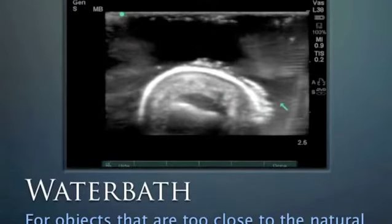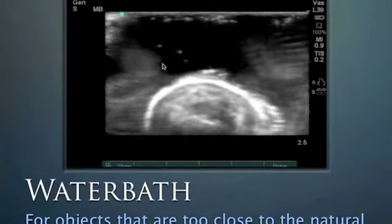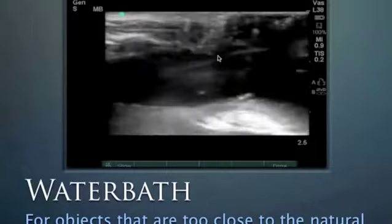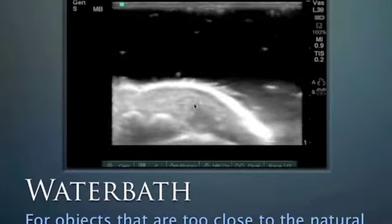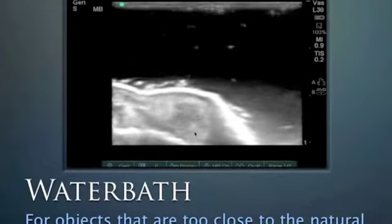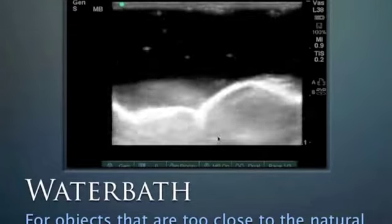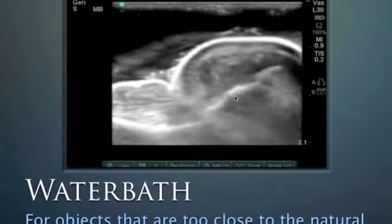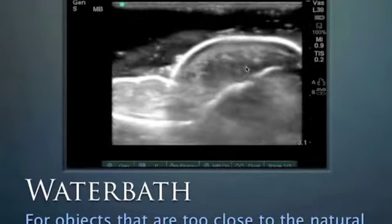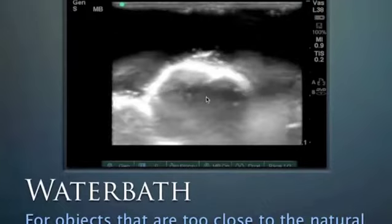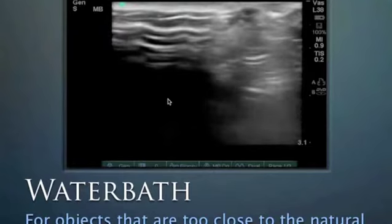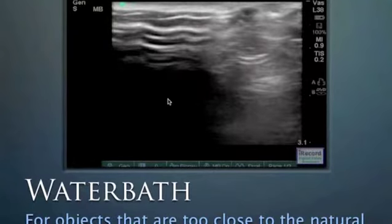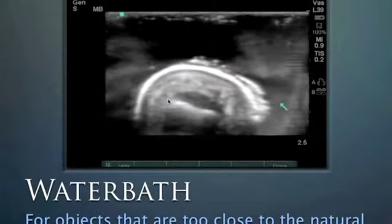Here's another example of a finger in the water bath. Standing away from the finger, we can see this patient has an abscess in the distal tip — the patient is even moving their finger and we can see it clearly. This happens to be the thumb, and we can see hypoechoic debris within the pulpy area. It's much easier to see when using the water bath.